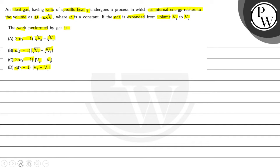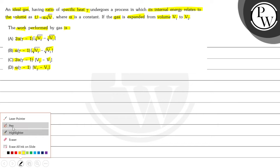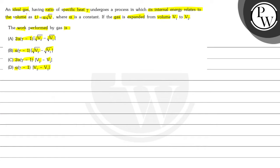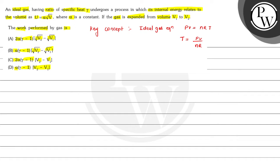We have to find out the relationship. The key concepts are: for an ideal gas, the ideal gas equation is PV equals nRT, so temperature T equals PV divided by nR. Also, the change in internal energy dU equals nCv dT, or if the change in temperature is T, we can write it as nCvT.